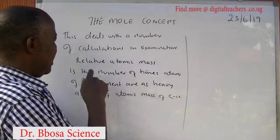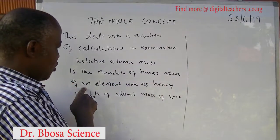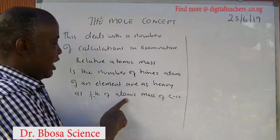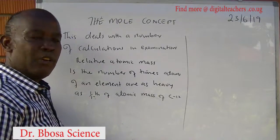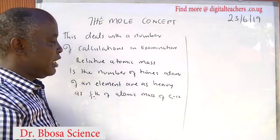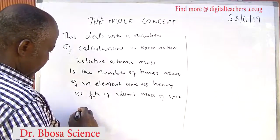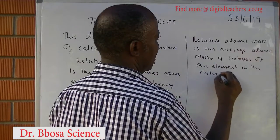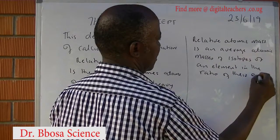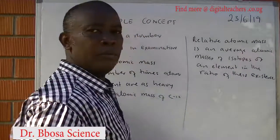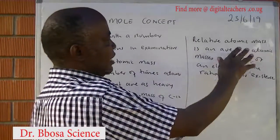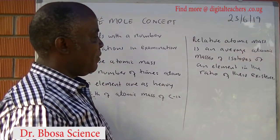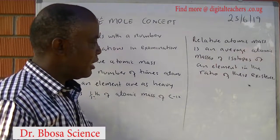Relative atomic mass is defined relative to how heavy atoms of an element are compared to 1/12 of the atomic mass of carbon-12. Carbon-12 has 6 protons and 6 neutrons.